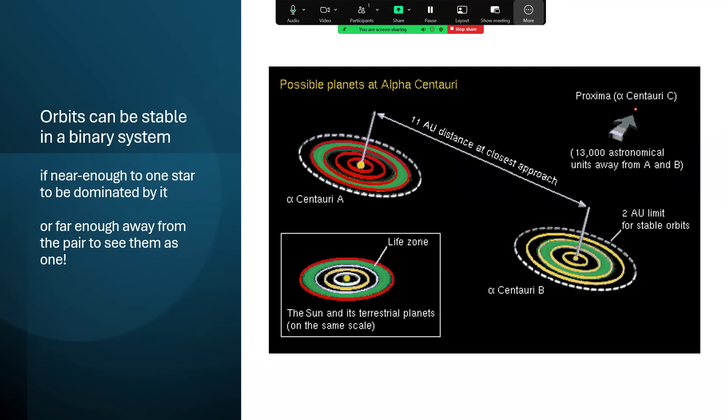We have this diagram for the Alpha Centauri A-B system here. You can see A at the top left and B at the bottom right. There are about 11 astronomical units, the Earth-Sun distance, apart from each other when they get closest, although the orbit of A and B around each other is somewhat elliptical. So this is their close approach. They can be further away than that. And at that distance, you find that there is a ring inside which you can form stable orbits around each of the two stars. It's a little bit smaller for Alpha Centauri B than it is for Alpha Centauri A because B is a little bit less massive as a star and so has weaker gravity.